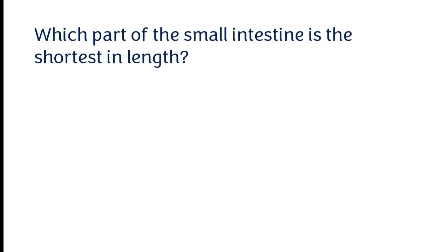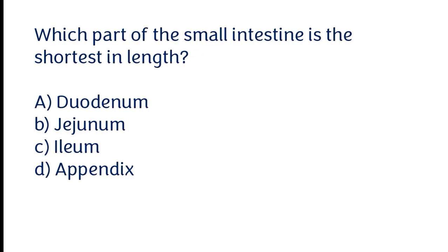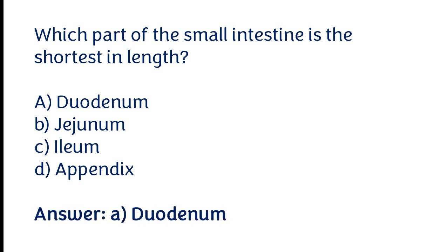Which part of the small intestine is the shortest in length? Options: a) Duodenum, b) Ileum, c) Jejunum. The correct answer is option A. The duodenum is the shortest part of the small intestine.